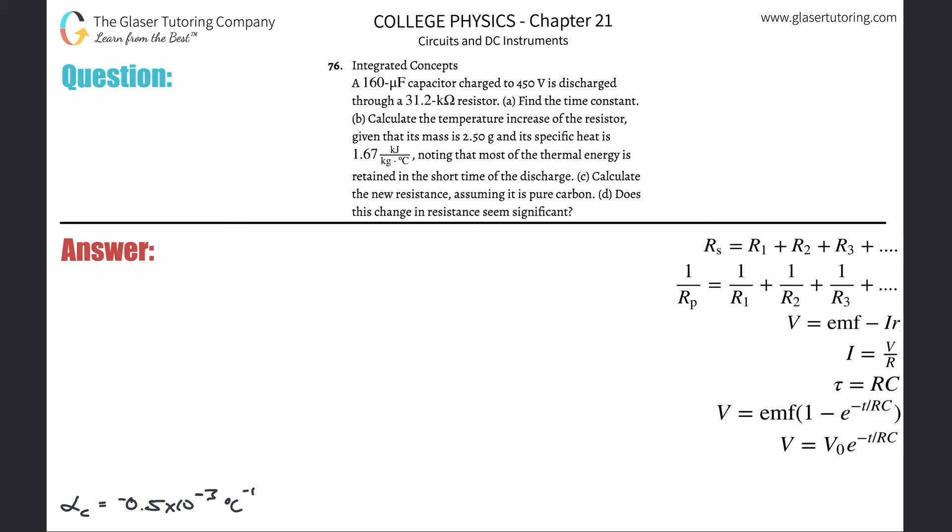Number 76, Integrated Concepts: A 160 microfarad capacitor charged to 450 volts is discharged through a 31.2 kiloohm resistor. Letter A: Find the time constant. Okay, so first of all, time constant we simply know is going to be equal to the resistance multiplied by the capacitance.